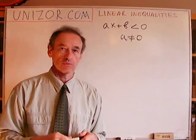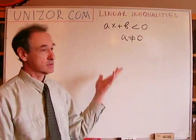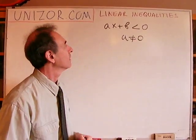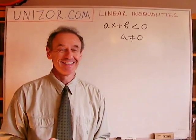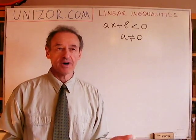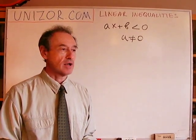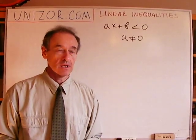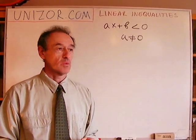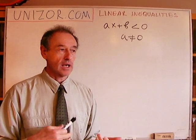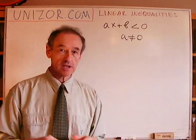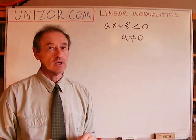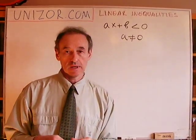A should not equal zero, because otherwise it's not an inequality — it's something else. The purpose is to find values of unknown variable x, which are the necessary and sufficient condition for the linear function ax plus b to be, in this case, less than zero.